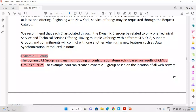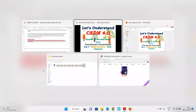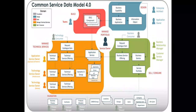What it says here: the Dynamic CI Group is a dynamic grouping of configuration items based on the CMDB group query. It means you have to bring the queries — you have to fill in pre-built queries — and you can use those queries in this particular area. If I come here I can show you, we are talking about this Dynamic CI Group.